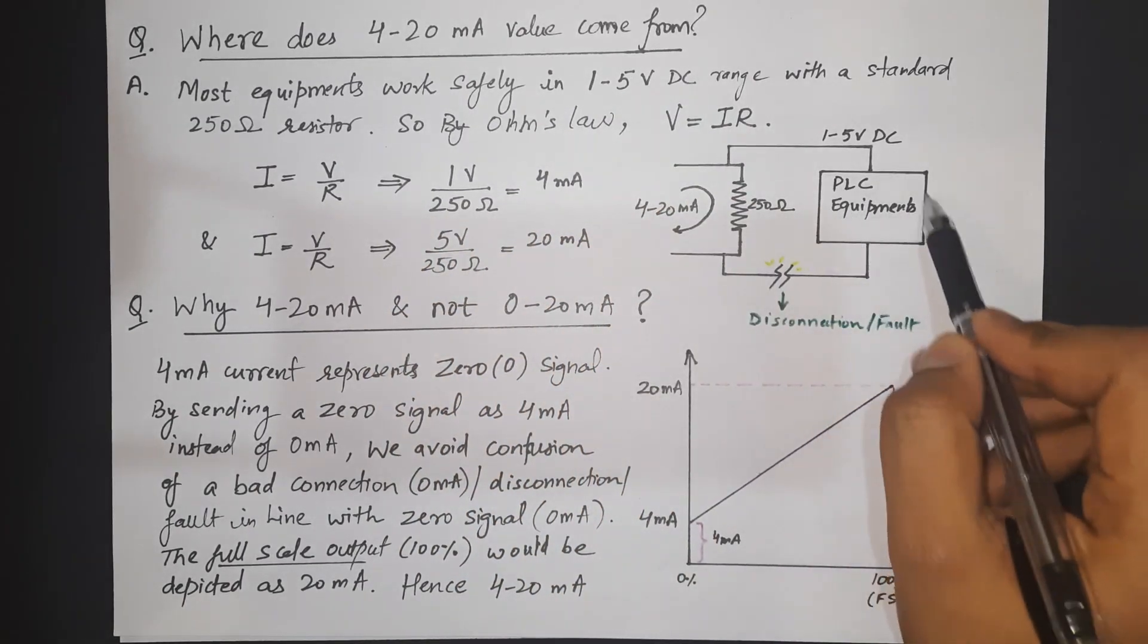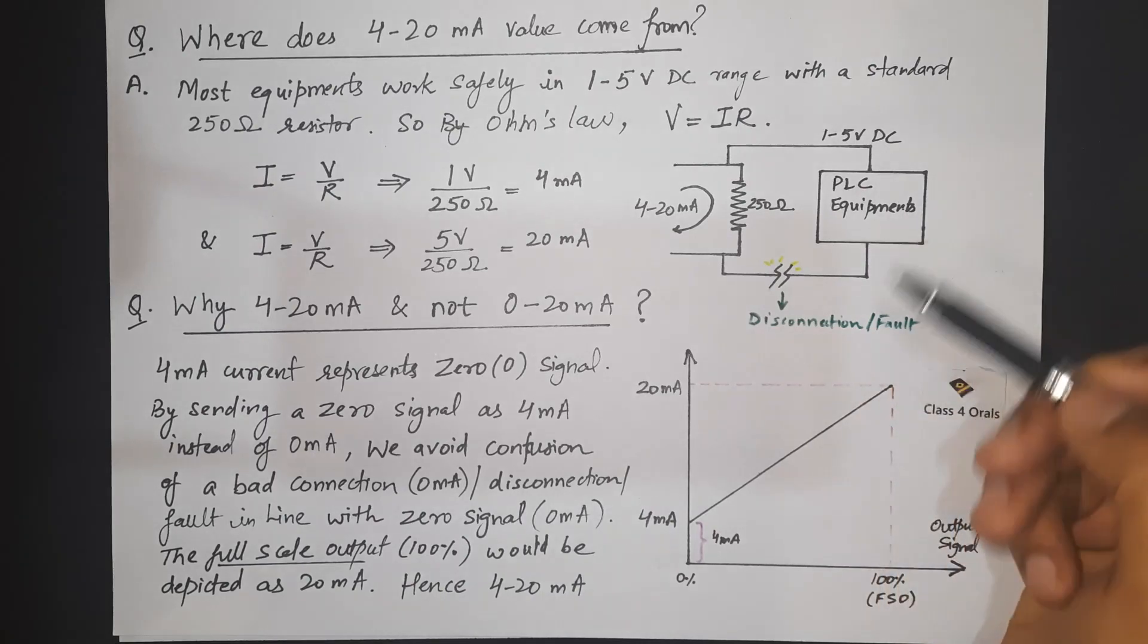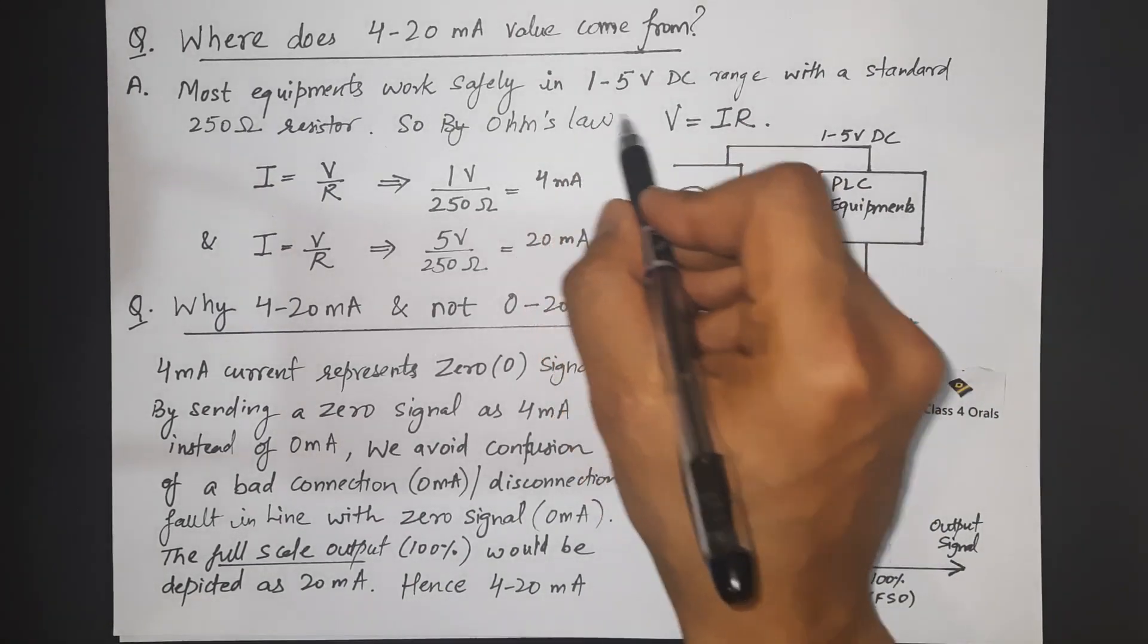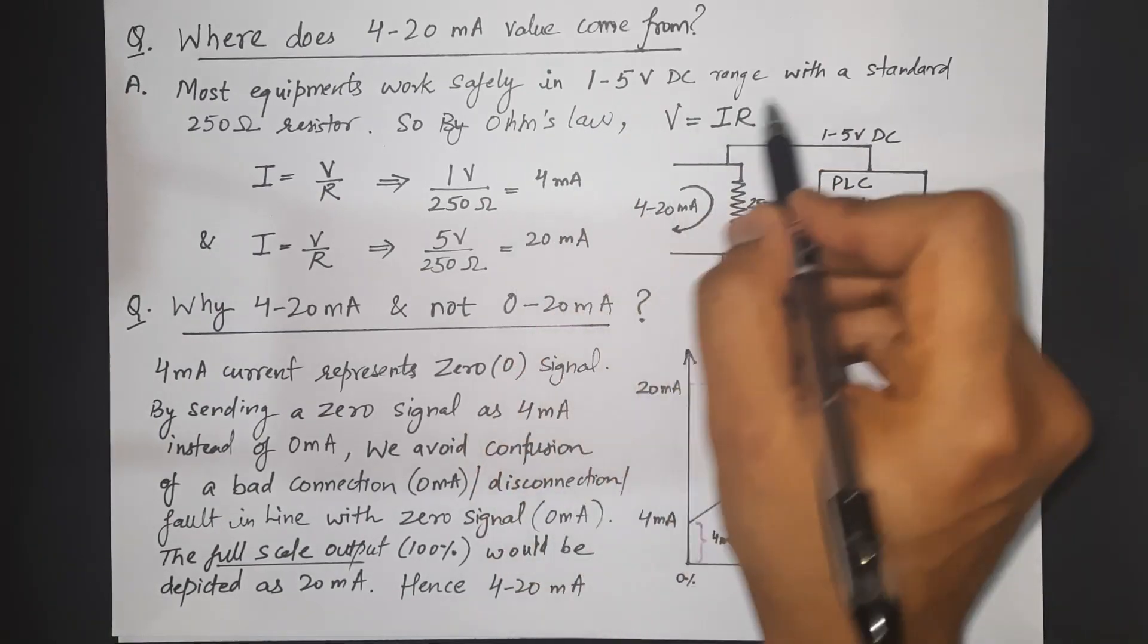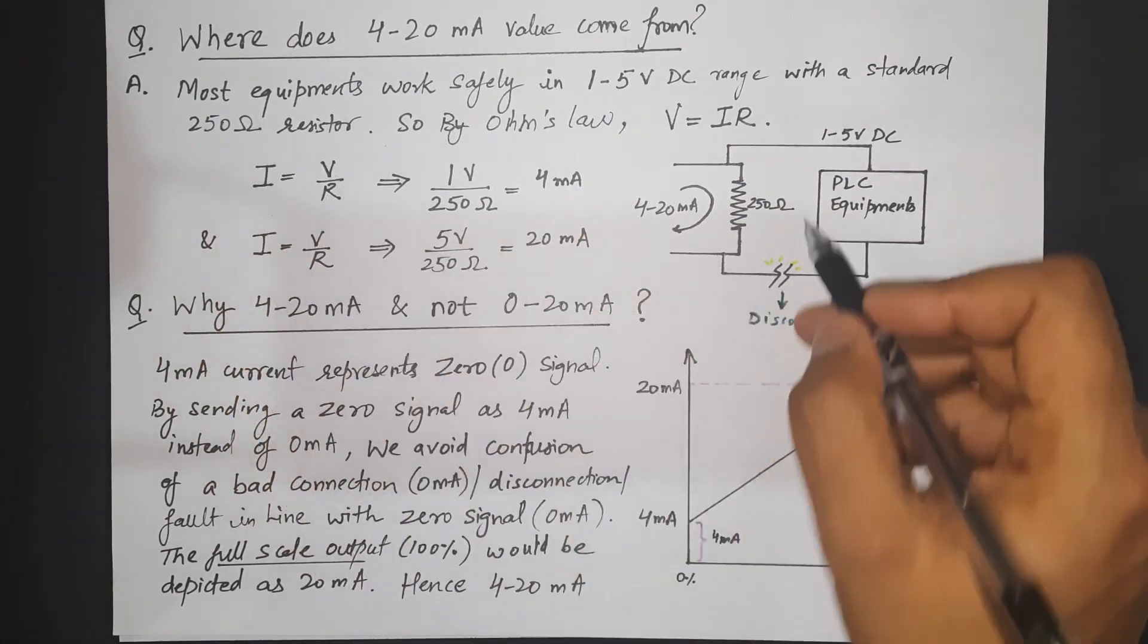because these equipment and the PLC or the cards they are very much safe in the working range of 1 to 5 V DC with the standard 250 ohms resistor.